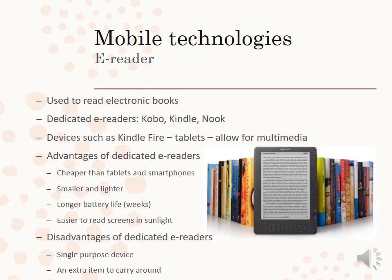The e-reader has maybe lost popularity because people prefer a tablet which has more functionality. E-readers are made just to read electronic books. You get dedicated e-readers like the Kobo, the Kindle, the Nook, and some tablets, and some e-readers allow multimedia to be used on them. The advantages are they're cheaper than tablets and smartphones, smaller and lighter, have a very long battery life — typically weeks — and you can more easily read the screen in sunlight. The disadvantage is that it's a single-purpose device, really made for people who read a lot.